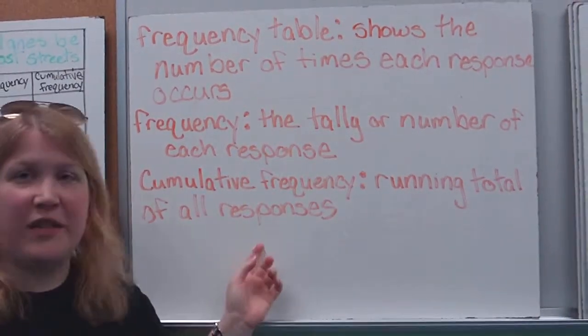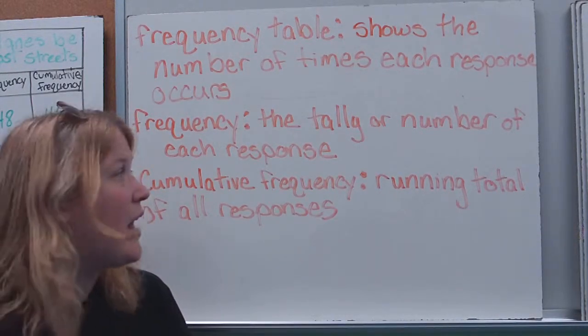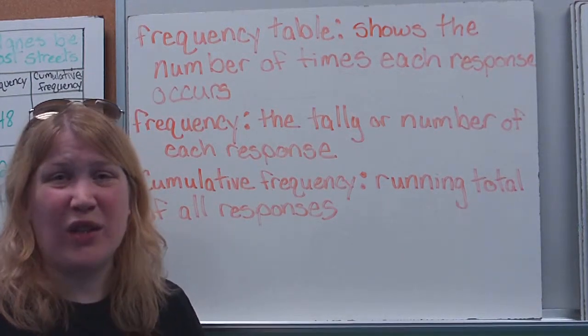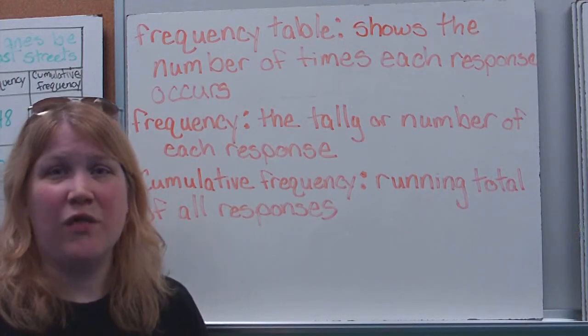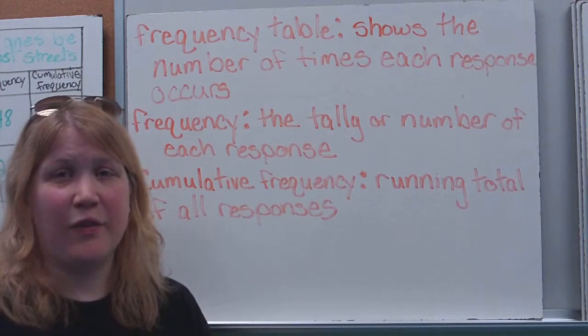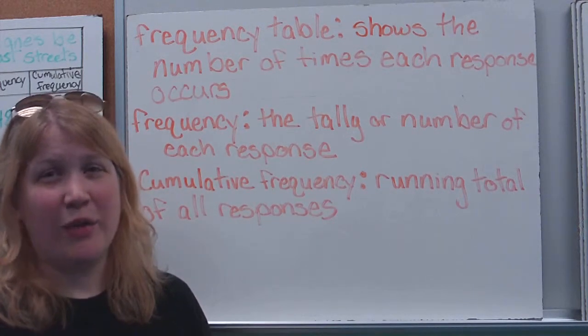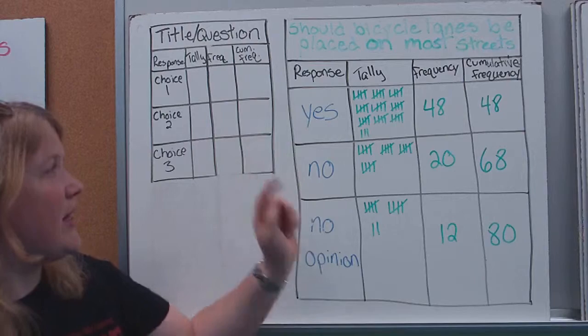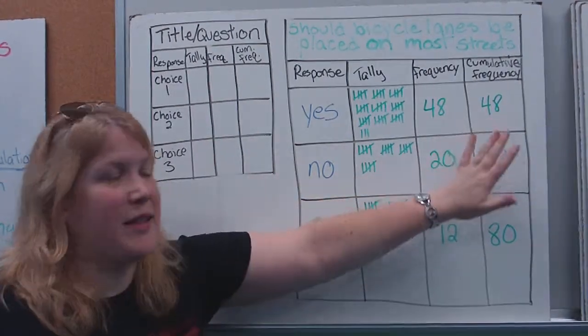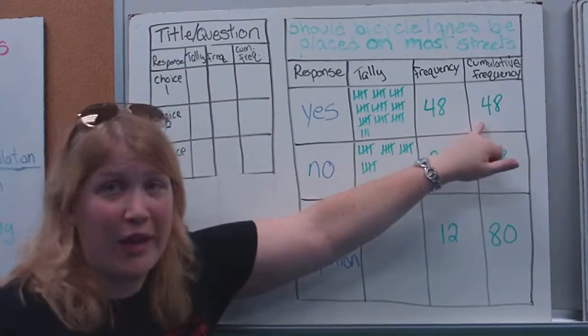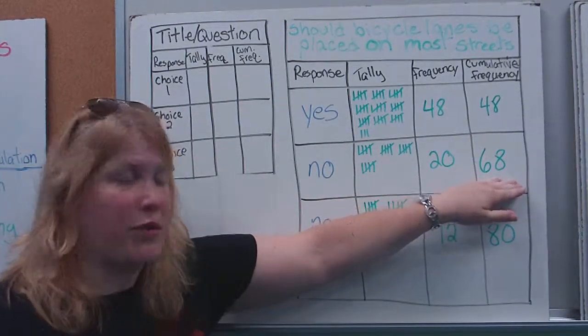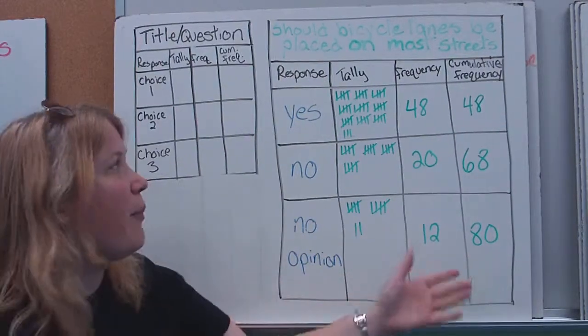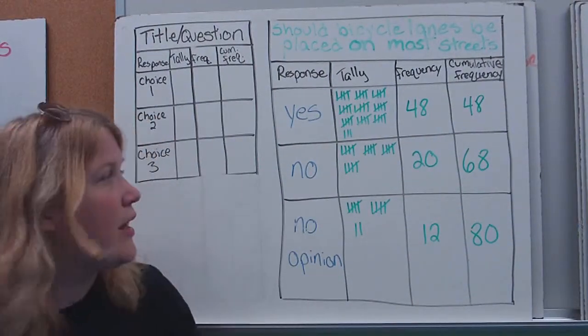The last thing, and you might have seen it over on that chart, is called the cumulative frequency. The cumulative frequency is the running total of how many people I asked. That helps me know how many people I've asked altogether because, really, your best data, your most informative data, has lots and lots of information in it. You want to get quite a few people. You can't really draw a conclusion from only asking two people. So, here you'll notice my cumulative frequency is the last column. So, I had 48 responses here. Now, I'm adding the 20 to the 48 I already had. So, at this point, I had 68 people total responding plus the 12 no opinion, which means I asked a total of 80 people should bicycle lanes be placed on most streets.